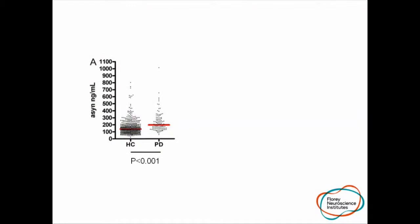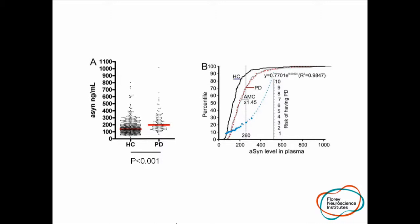We then looked at a much larger cohort using healthy controls from the ABLE group with 720 subjects and 150 subjects with Parkinson's disease who had been fully phenotyped, and effectively confirmed the findings that, on average, statistically there was a higher level of alpha-synuclein, though the separation is not clean and complete. Plotting this with alpha-synuclein level on one axis and percentile on the other, the red dotted line is the Parkinsonian population, and you can see that roughly about a third of the Parkinsonian population sit above the 90th percentile of healthy controls.